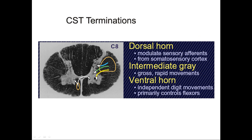Here's another depiction of the terminations of the corticospinal tract. It terminates mainly in the ventral horn, though some axons project to the dorsal horn and the intermediate gray. About 10% of the corticospinal tract axons do not cross the midline but form a small tract called the anterior corticospinal tract. The lateral corticospinal tract sits in the lateral funiculus, while the anterior corticospinal tract sits in the anterior funiculus of the spinal cord.